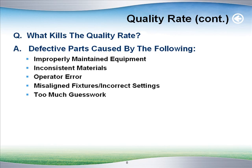What kills your quality? Improperly maintained equipment can cause all kinds of problems — inconsistent materials, operator error, misaligned fixtures, incorrect settings, and too much guesswork. I've been in many plants where the operators are almost like artists; they have to tweak and adjust and do all kinds of special tricks. We really want hard settings — we want to get to the right place and stay there, with a standardized process so that every time you set up a machine, it goes to the right best place to begin. All these things and others contribute to the quality rate.